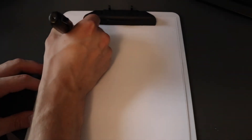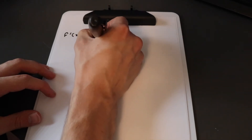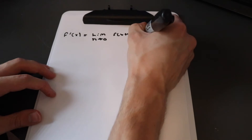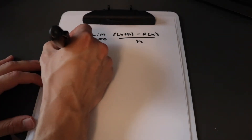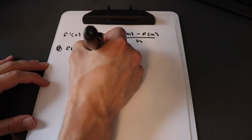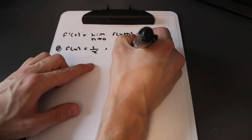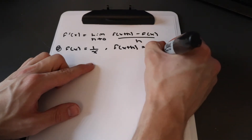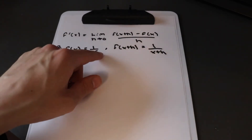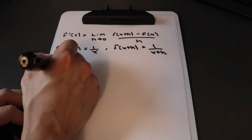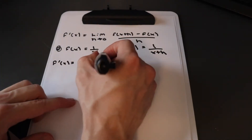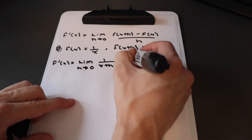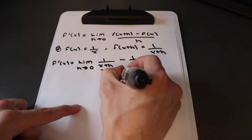Let's work on a second example. The definition of a derivative is: f prime of x equals the limit as h approaches zero of f of x plus h minus f of x, all over h. Our second example is f of x equals 1 over x. So f of x plus h is just 1 over x plus h. We substitute both into the equation: the limit as h approaches zero of 1 over x plus h, minus 1 over x, all over h.